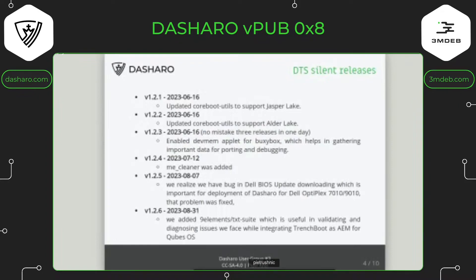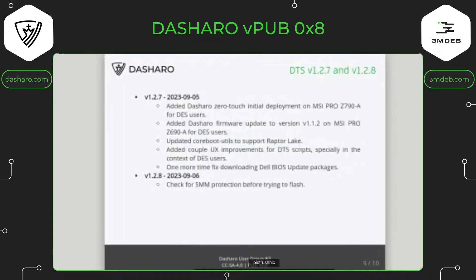In version 1.2.6 we added the NinElements TXT Suite, because of the development of TrenchBoot as a DRTM and the need for this tool to help us diagnose if Intel TXT is correctly configured. In version 1.2.7 we added zero-touch initial deployment for the Z790 MSI, which also enabled deployments for Dasharo Entry Subscription users. We also made fixes and improvements to ensure that version 1.1.2 of the Z690 also worked for those users. And we added Raptor Lake support for coreboot utils.